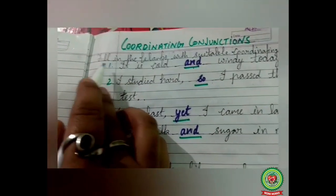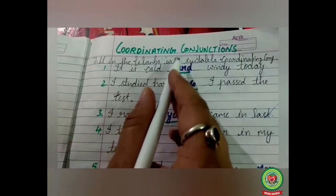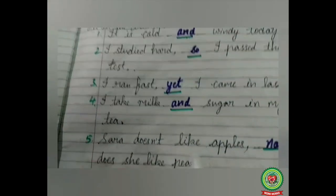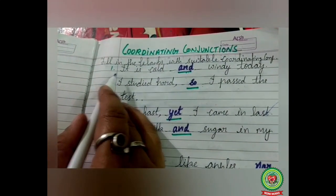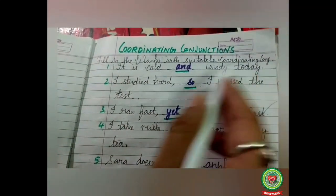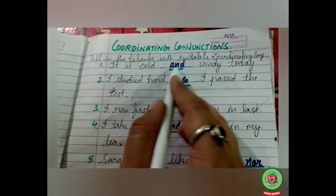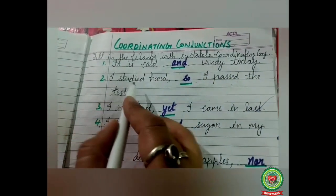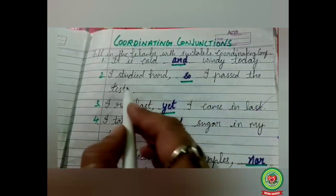Now we have one more exercise — fill the blanks with coordinating conjunctions. Number one: 'It is cold ___ windy today.' Addition is shown, so the answer is 'and': 'It is cold and windy today.' Number two: 'I studied hard ___ I passed the test.' Result is shown, so the answer is 'so': 'I studied hard, so I passed the test.'